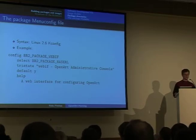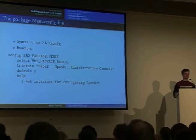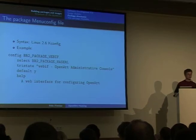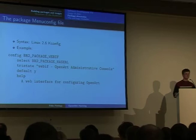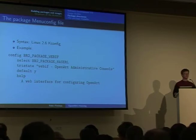And the second line, the select, is actually our way of handling dependencies. If one package depends on another, rather than adding a depend line on it, we add a select line so that if you select this package and it requires another package, it will automatically get selected by the menu config system so you don't have to look around for all the missing libraries before you can select the software that you want.